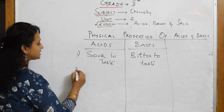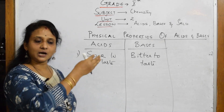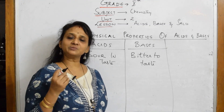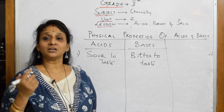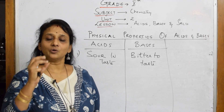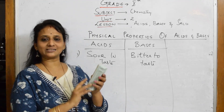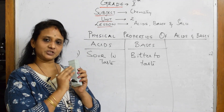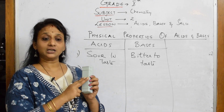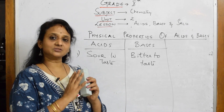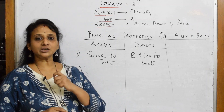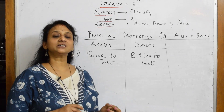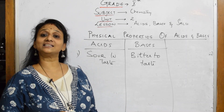Now let us come to the next physical property of acids — the litmus test. Litmus paper is used for testing. Litmus is a substance obtained from a plant called lichen. When you see the surface of a tree trunk or roots, you find small white outgrowths — those are lichen plants. The lichen powder is extracted, mixed with water, and becomes litmus solution.